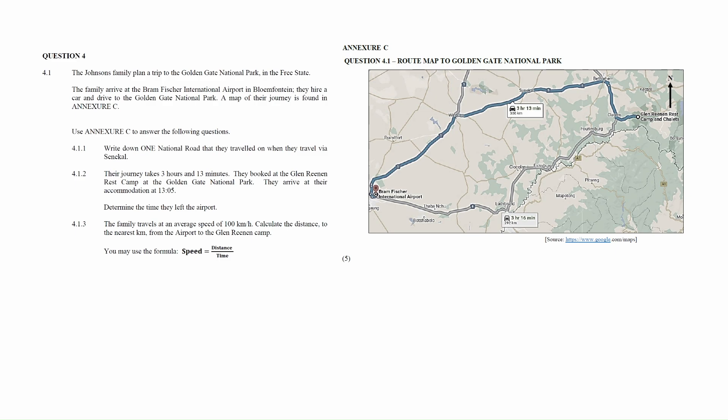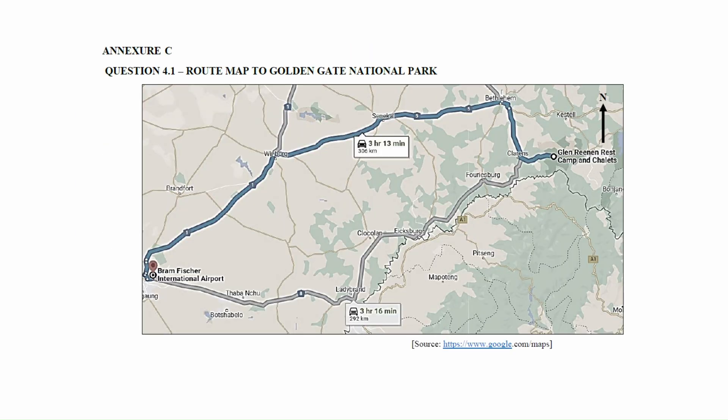Question 4.1 consists of two measurement questions and one maps and plan question designed to assess your understanding of road maps. You are given a scenario where the Johnson family plans a trip to the Golden Gate National Park in the Free State. The family arrived at the Bram Fisher International Airport in Bloemfontein, hired a car and drove to the Golden Gate National Park. A map of the journey is found in Annexure C.